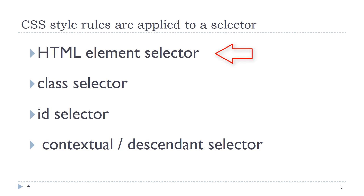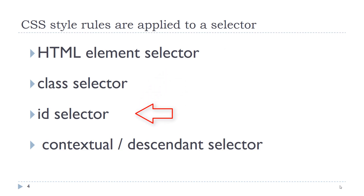Cascading stylesheet rules are applied to what we call a selector. We have already looked at the element selector, meaning any HTML element can be used as a selector. However, those style rules would apply to every instance of that HTML element in that document. There are times when this might not be useful. We also have a class selector, an ID selector, or what is referred to as a contextual or descendant selector.